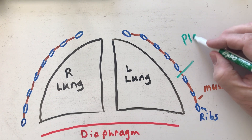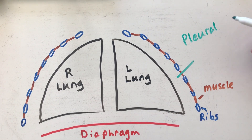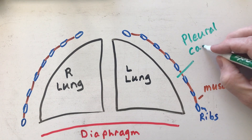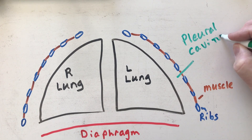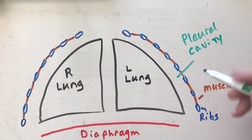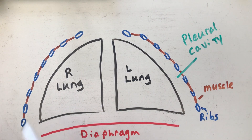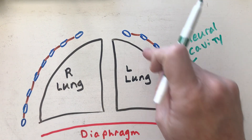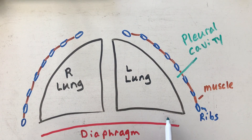Remember, you have one on the right and one on the left, so technically it's pleural cavities — but I'm just going to write pleural cavity. I have one on the right and one on the left. This is the pleural cavity on the right, this is my pleural cavity on the left, and this down here would also be pleural cavity.